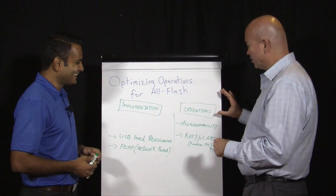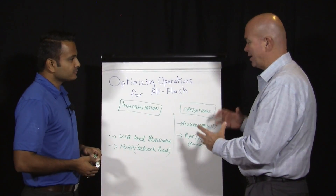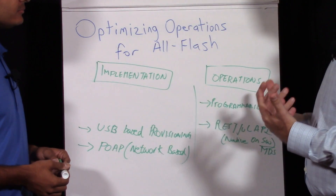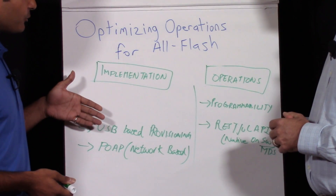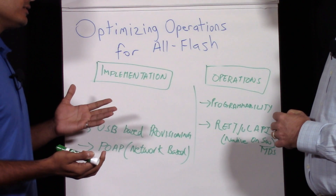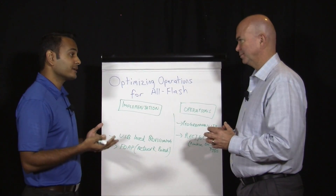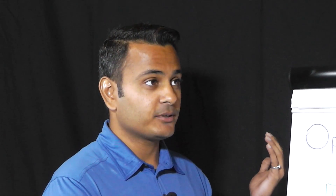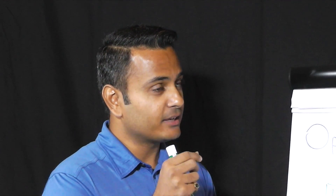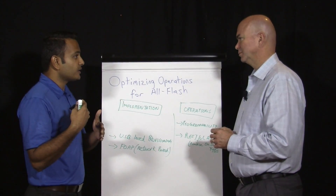Now let's talk about operations — day-to-day living with the environment. Once our switches are provisioned, traditionally you have the Cisco NX-OS CLI, you can SSH to the switch, or use DCNM — the Cisco Data Center Network Manager — which is a GUI tool. But you still need people to make changes. What about newer applications specifically designed for all-flash array data centers? If you want to test those in a DevOps environment on a real network, not a test environment, you need automation to quickly make changes and remove them when testing is done.